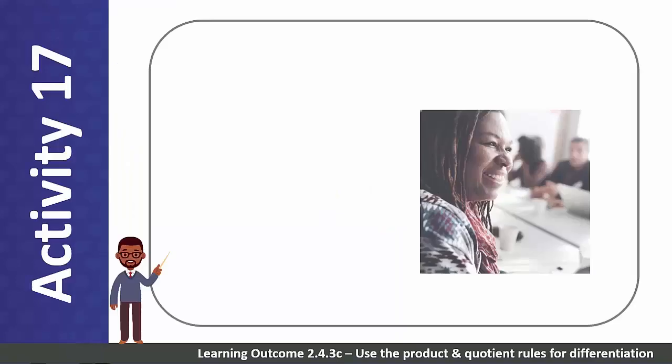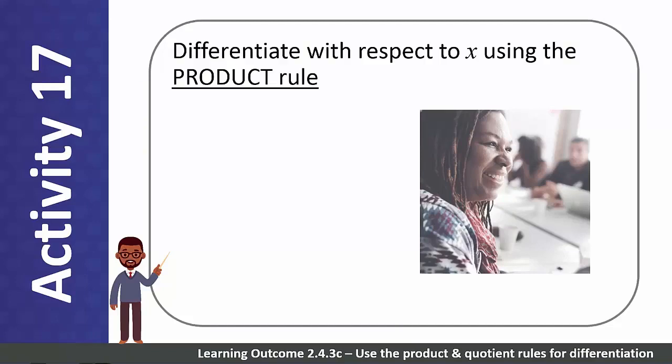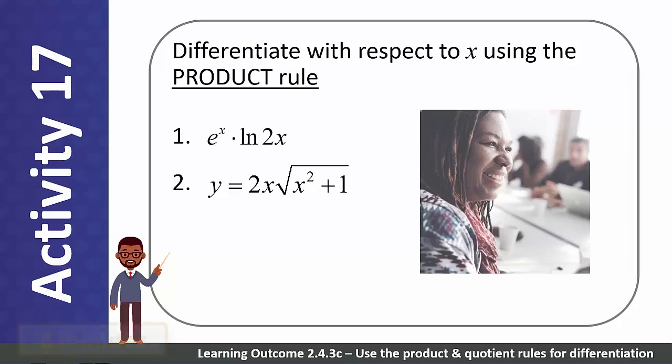Work through the following examples on your own or in pairs. Differentiate with respect to x using the Product Rule. Number 1: e to the power of x multiplied by the natural log of 2x. Number 2: y equals 2x multiplied by the square root of x squared plus 1.